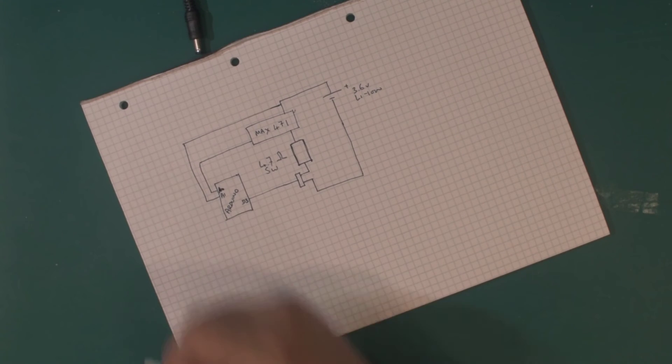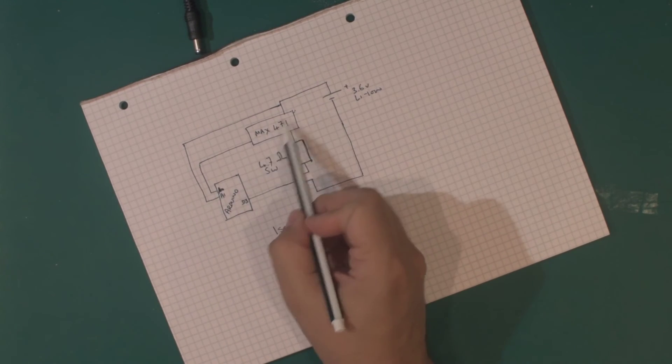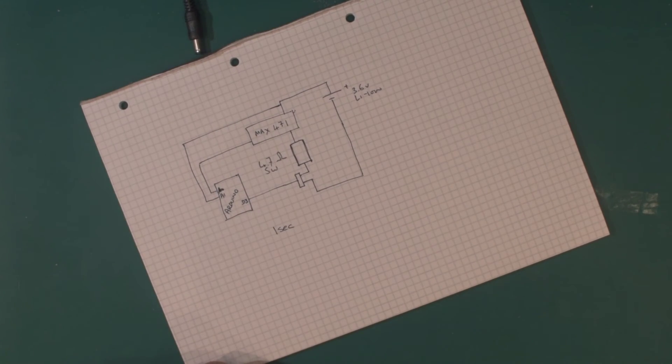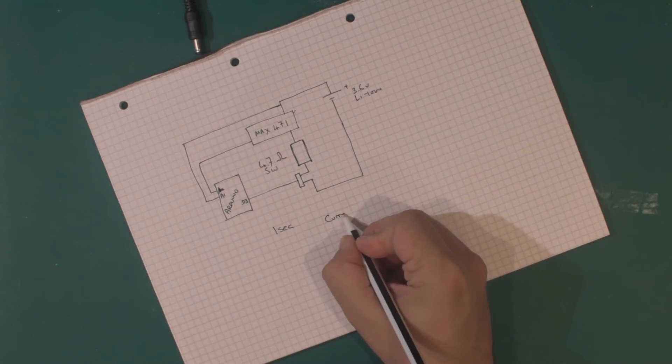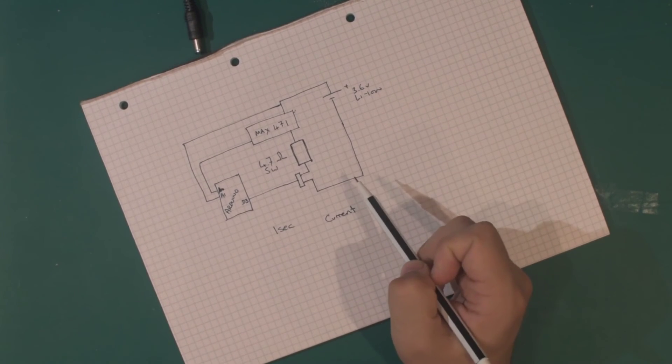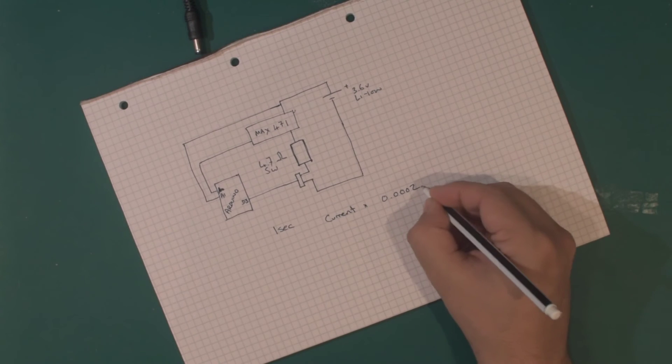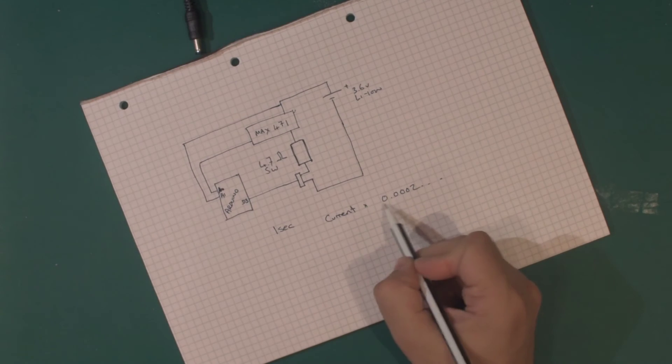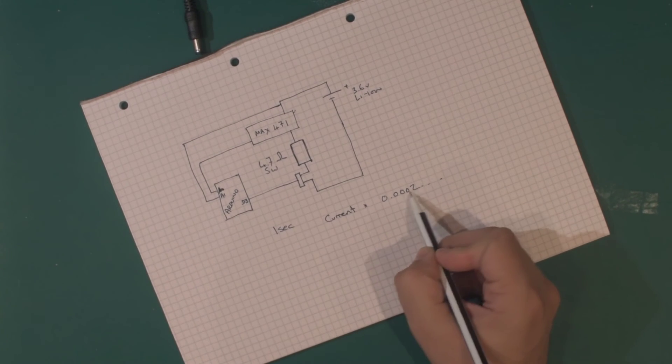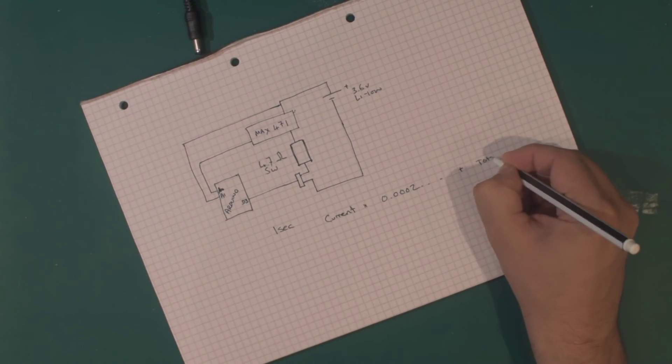So every one second we read the current from the 471. We multiply that by 0.0002 to give us current in milliamp hours. So this is one second of an hour to multiply out the current, and then add that on to our total current.